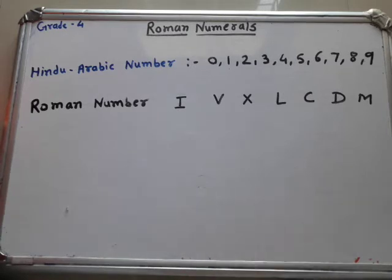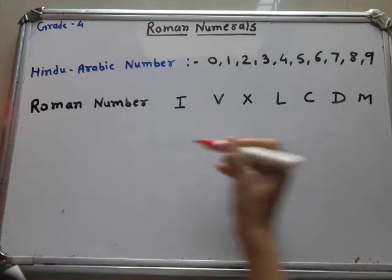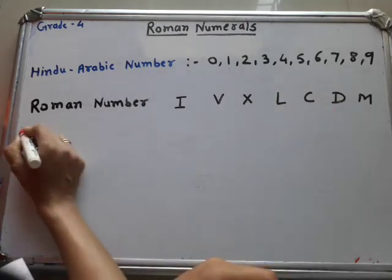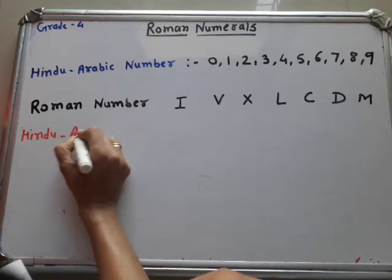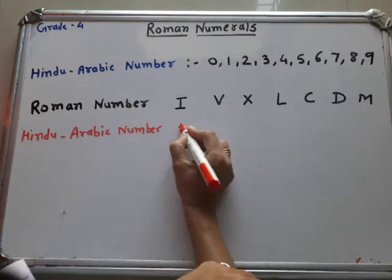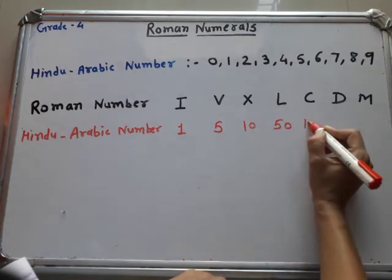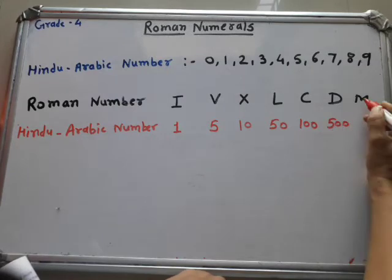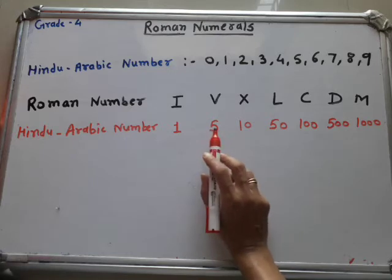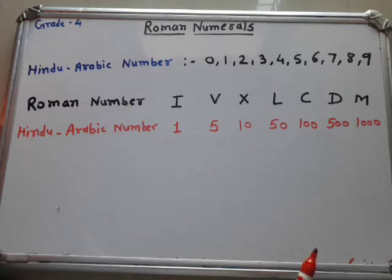Now let's look at the values of the 7 Roman numeral symbols. I means 1, V means 5, X means 10, L means 50, C means 100, D means 500, and M means 1000. By using these 7 symbols we can write any number in Roman numerals. Remember: there is no zero in Roman numerals, unlike in Hindu-Arabic numerals.